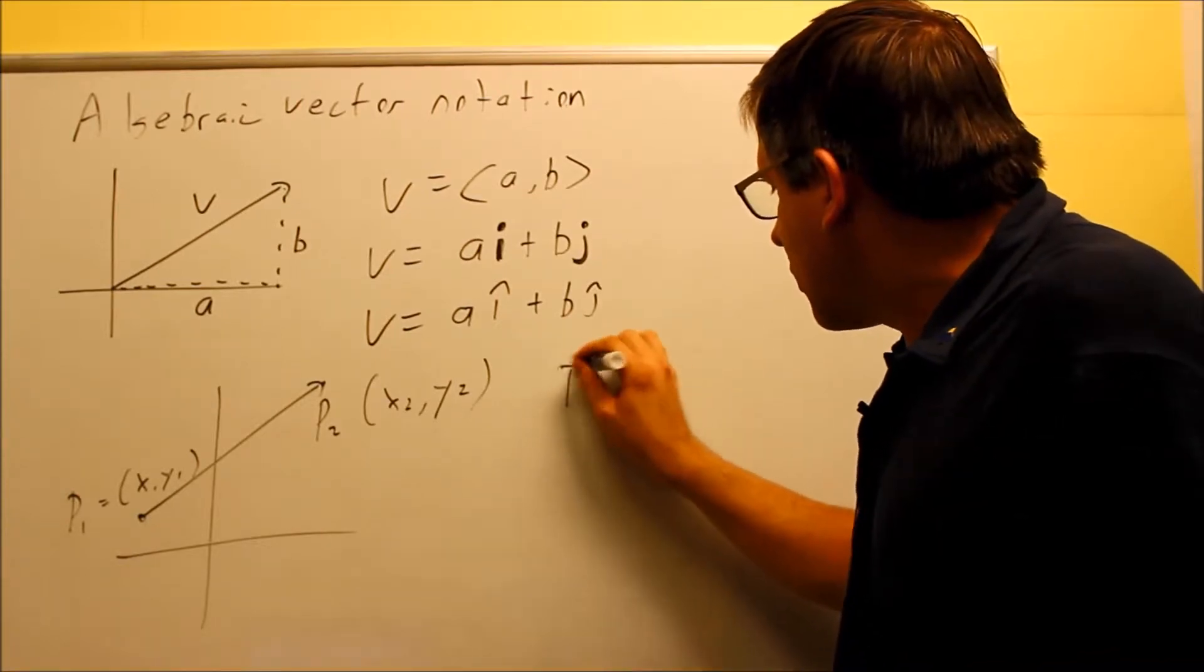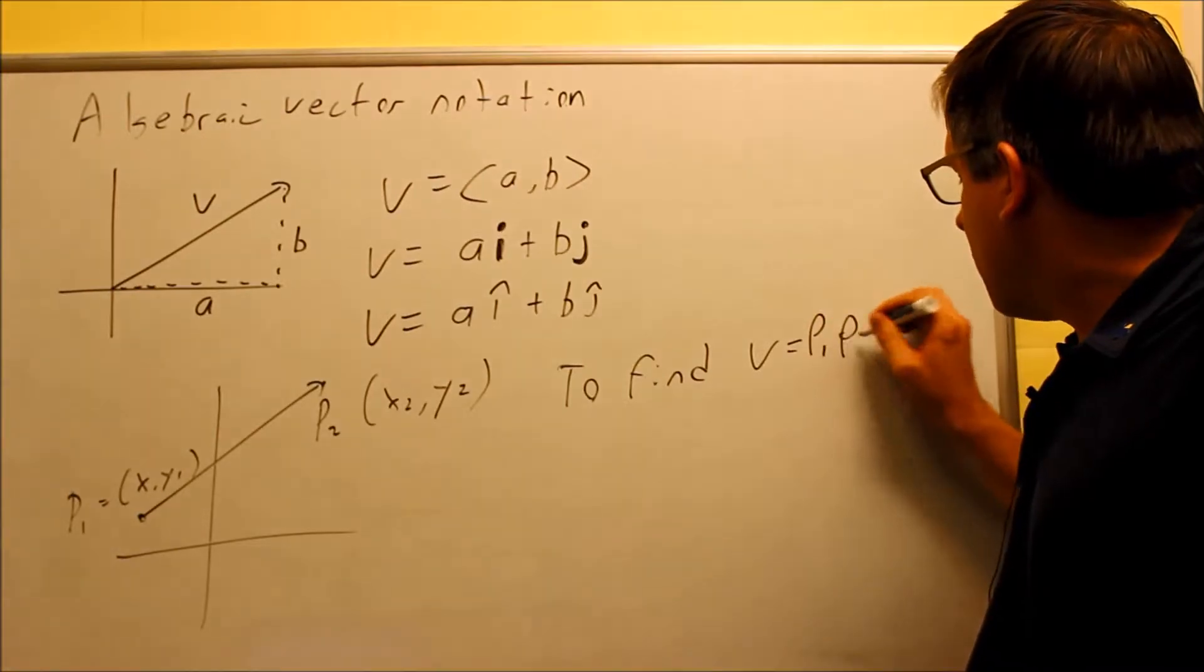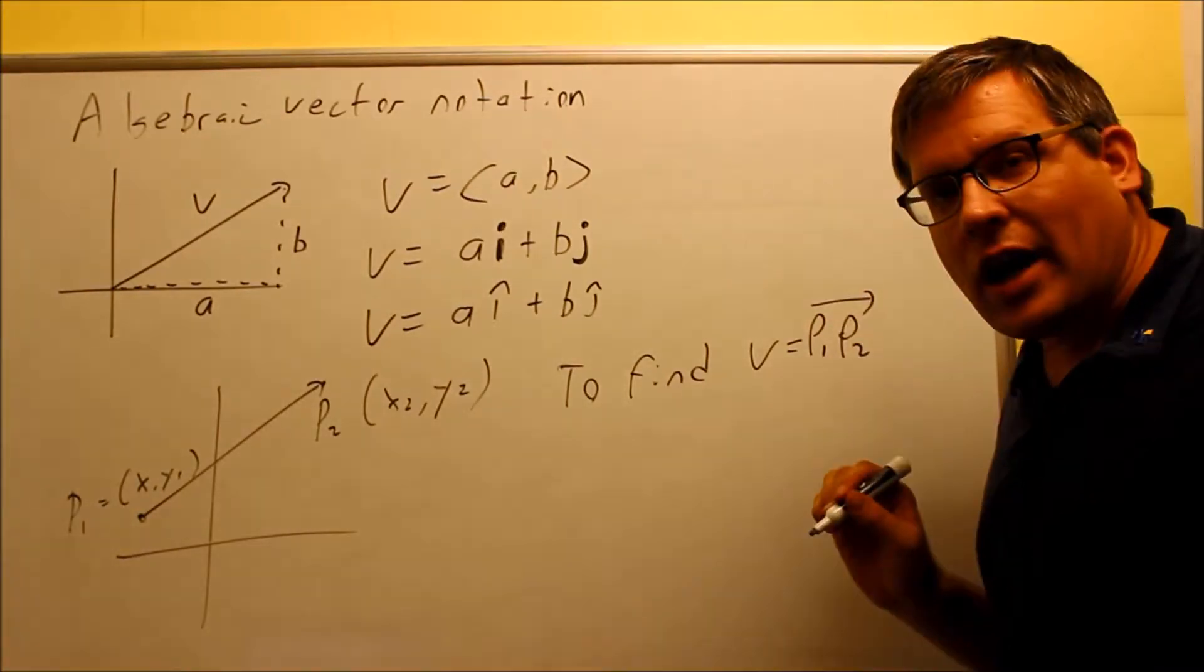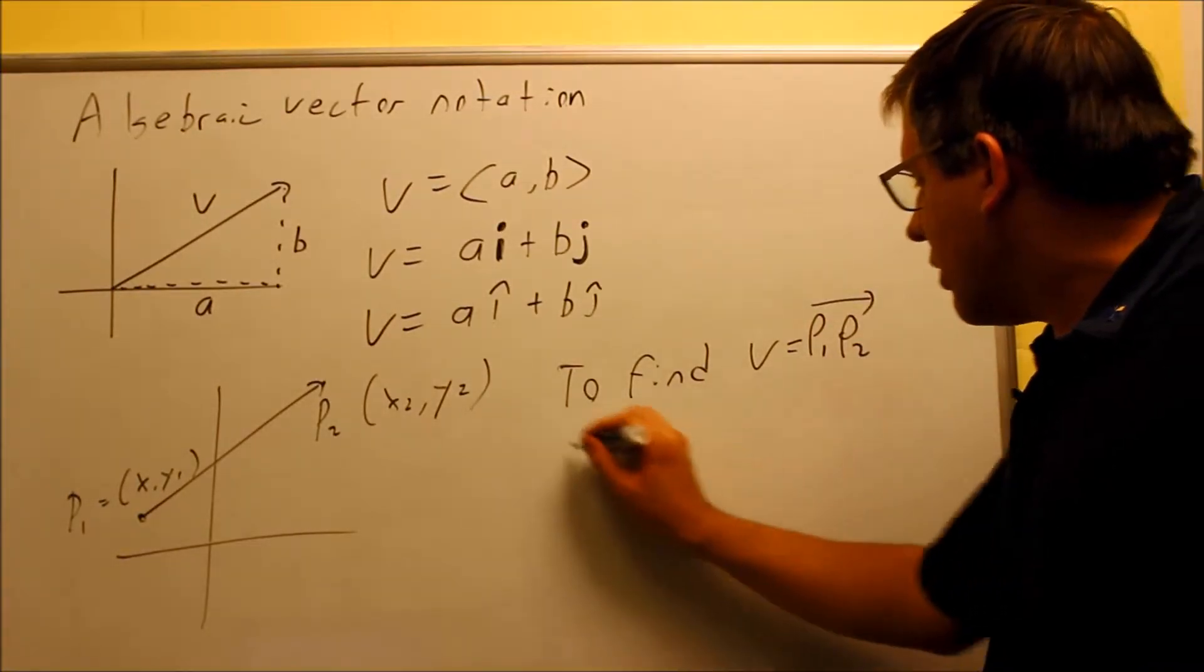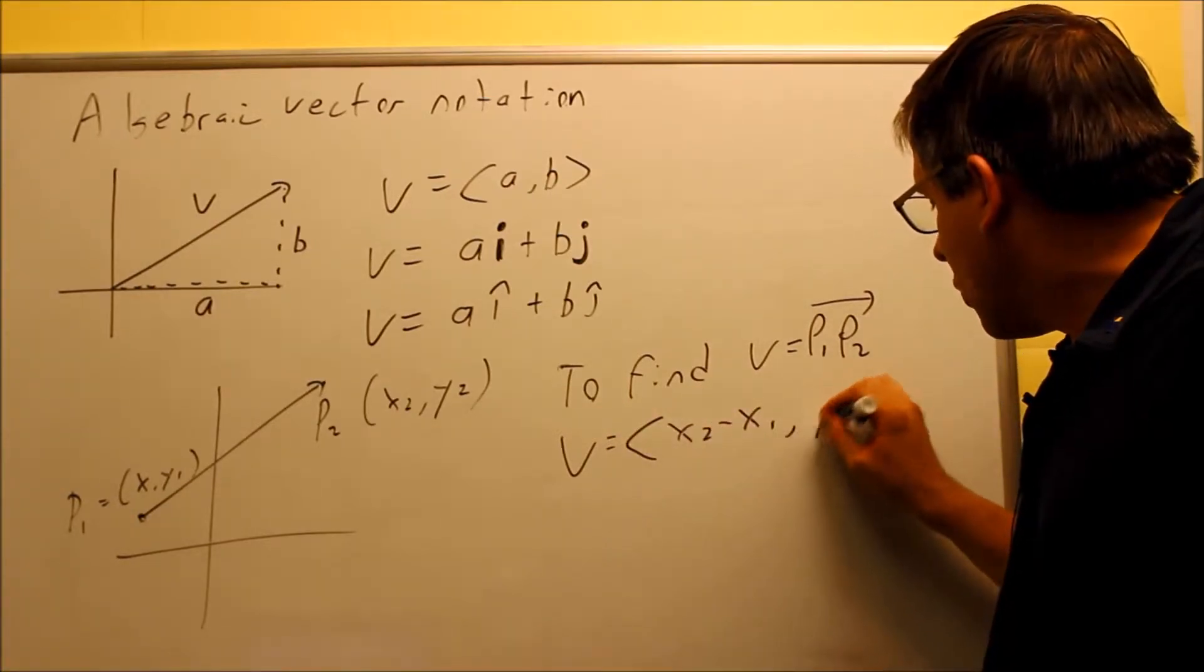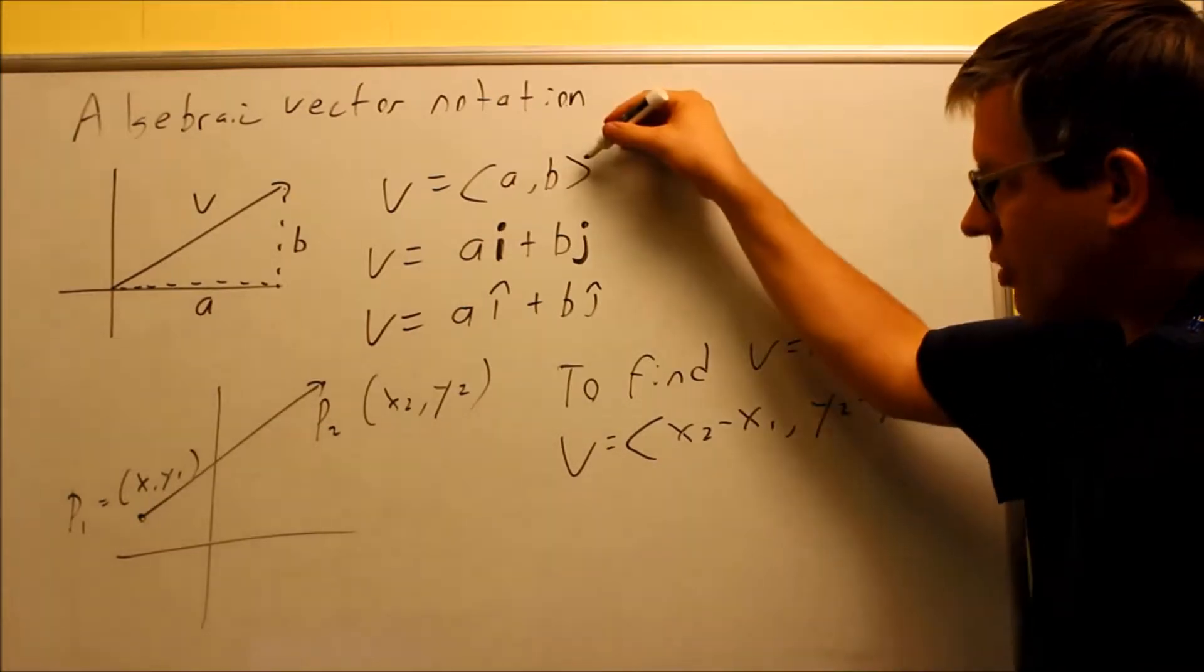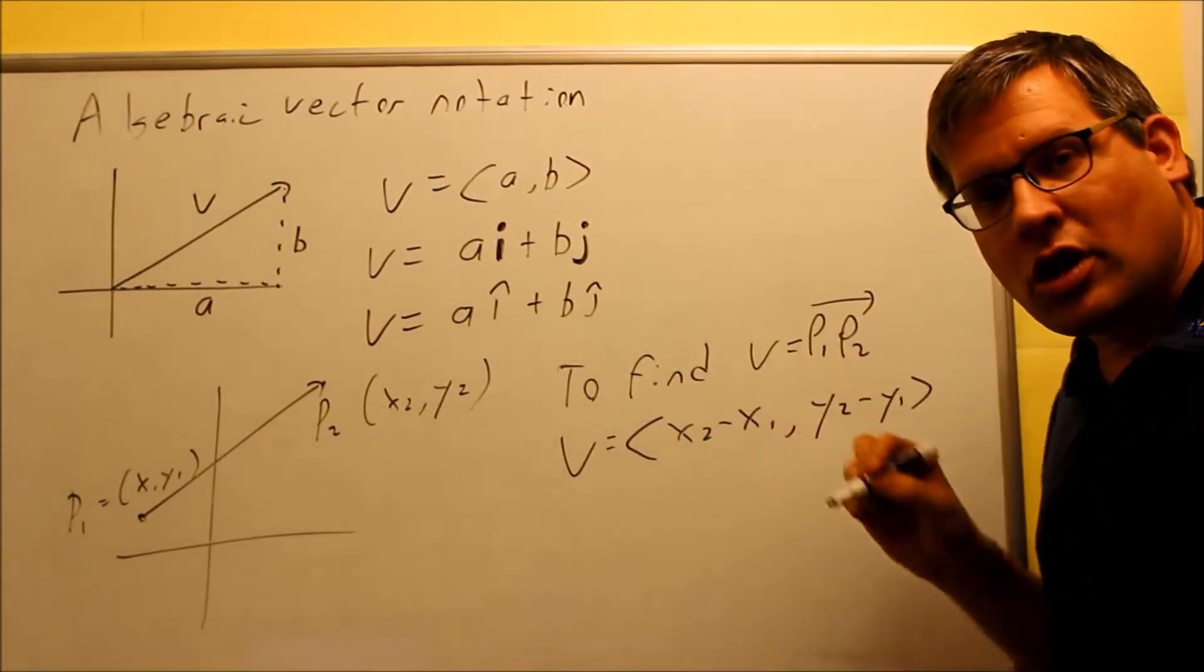So basically to find V equals P1, P2, then basically your V is going to equal, here's a formula. It's going to be X2 minus X1, Y2 minus Y1. That's a formula. Again, we're using this notation, but it could also work for the other notation as well.